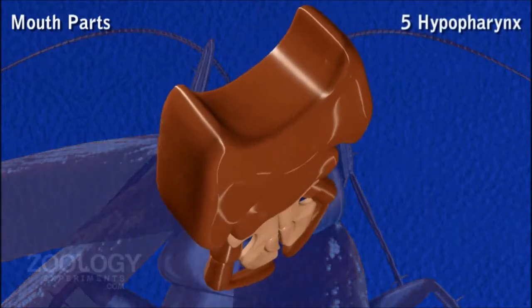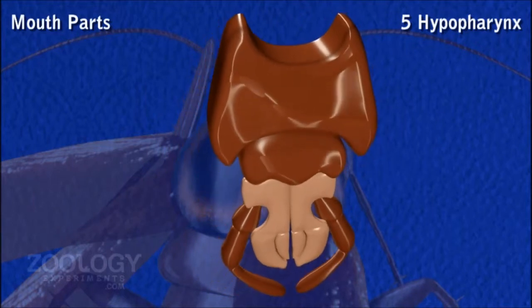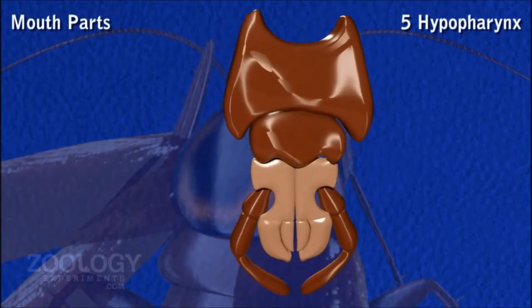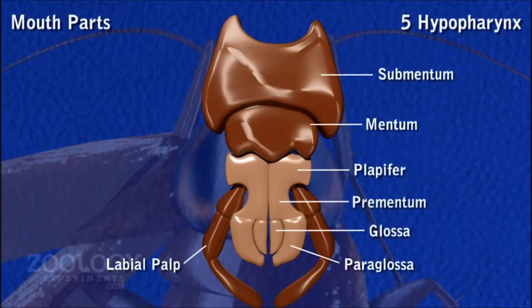Hypopharynx. It lies between the maxillae and above the labium. Inside the mouth cavity, it is a median, somewhat cylindrical structure, also known as lingua.